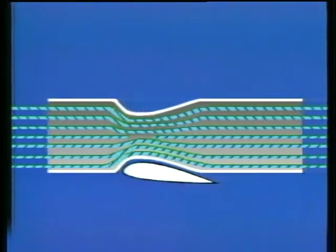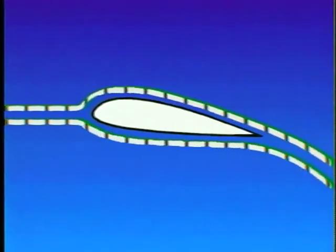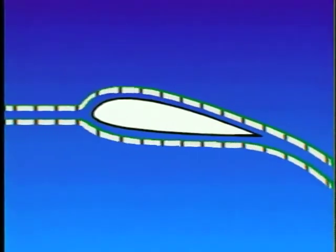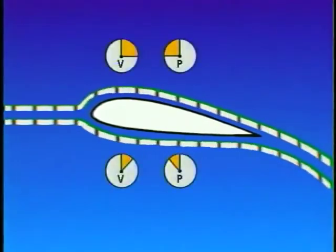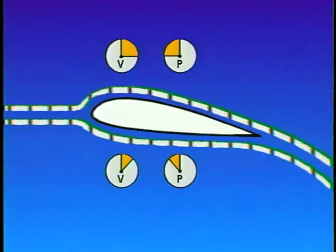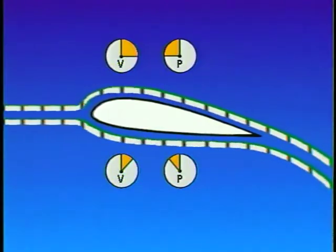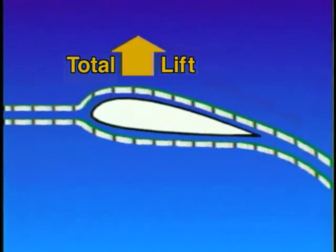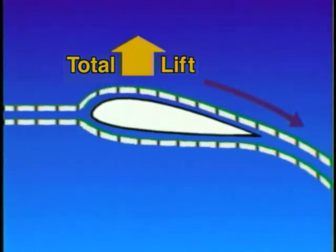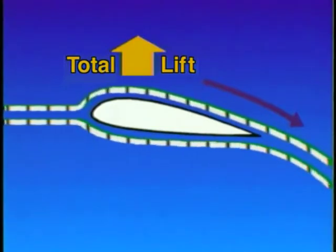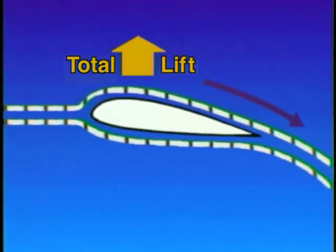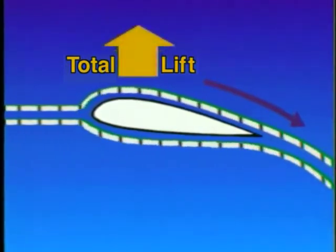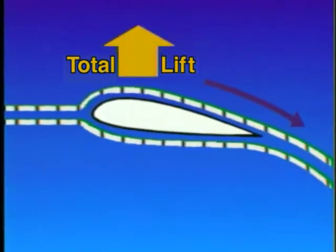If you were to replace the constriction with an airfoil, such as a wing, the same principle would still apply. As oncoming air meets the leading edge of the airfoil, it separates with part of the airflow going over the top and part going below. Since the air flowing over the top has farther to go, it must travel faster. The result is lower air pressure above the wing, which is a component of total lift. The remaining lift is provided by the downward-backward flow of air generated from the top surface of the wing. This can be explained by Newton's third law of motion, which states that for every action there is an equal and opposite reaction. The reaction to this downwash results in an upward force on the wing and an increase in total lift.